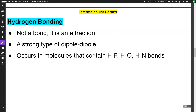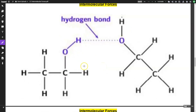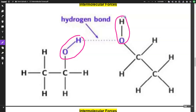Hydrogen bonding is a special type of dipole-dipole interaction. The name is a little misleading — it's called hydrogen bonding, but it's not actually a bond; it's an attraction. It only occurs with these three bonds: H-F, H-O, and H-N. An easy way to remember that is it spells out "FON." Just because you have hydrogen in a molecule doesn't mean it has hydrogen bonding — you have to have an H-O, H-F, or H-N bond within the molecule.